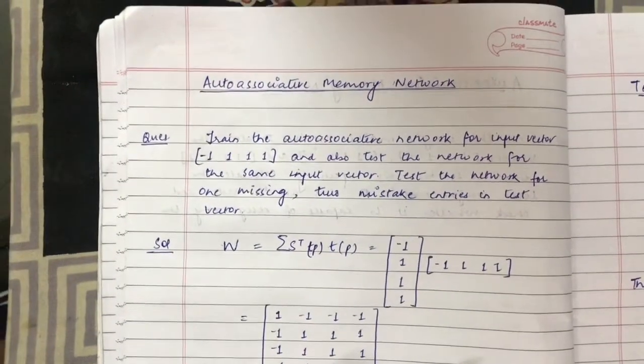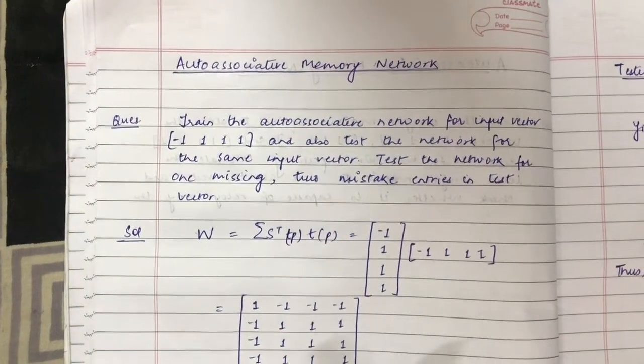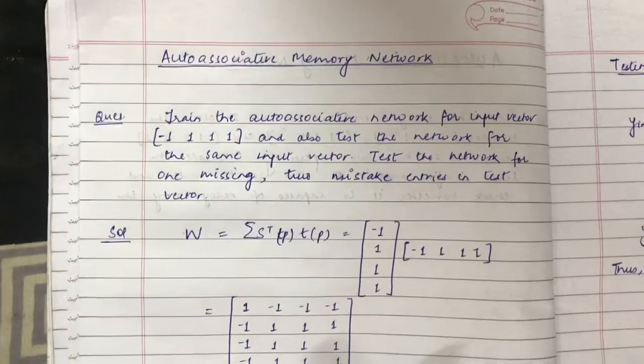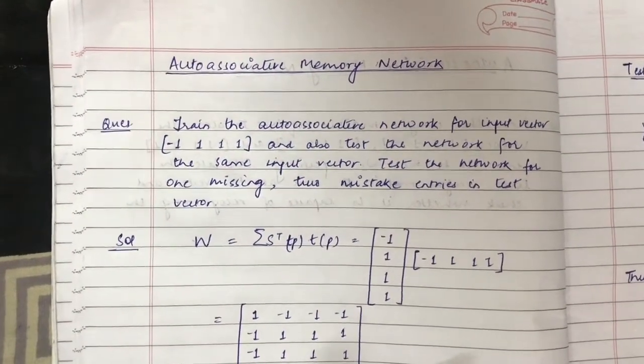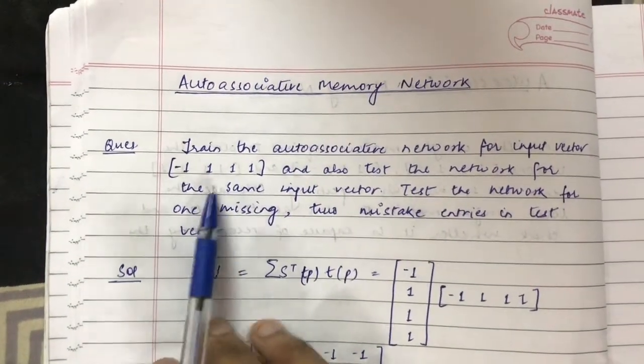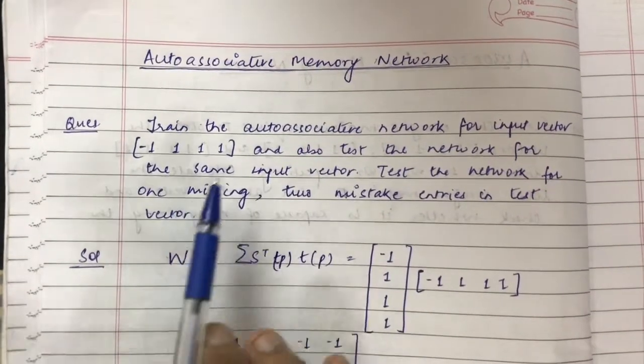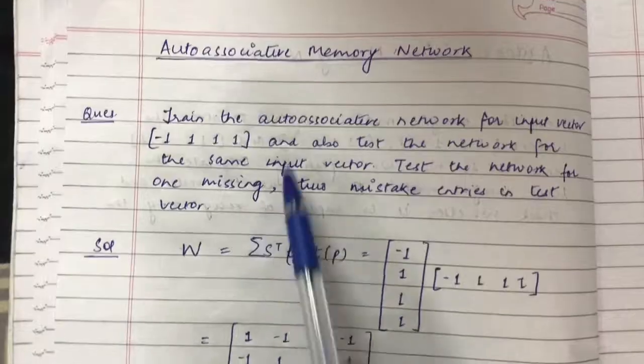Hello friends, in this tutorial I will be looking at a question on auto-associative memory network. I will not discuss the training algorithm because it is almost similar to hetero-associative. The only difference is the number of input vectors is equal to the number of output vectors here. That means in the question, output will not be given, only the input vector will be given.